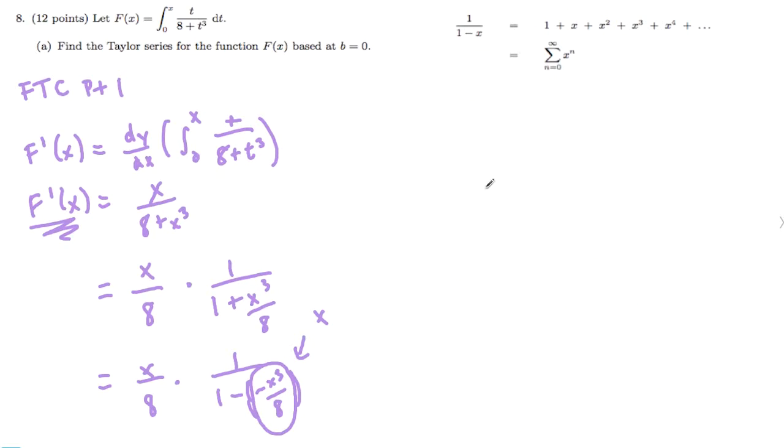Now we just substitute stuff in. So n equals 0 to infinity. And since this is our x, we're going to plug this entire thing in for this x here. We're going to plug this entire thing in for x. So negative x to the third over 8 to the n.